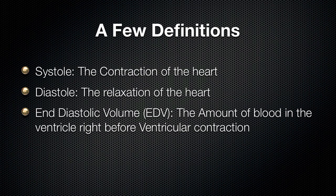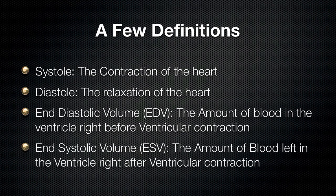Then of course we have the end systolic volume, which is the amount of blood left in the ventricle right after ventricular contraction. So when the ventricles contract and push the blood out to the lungs and to the rest of the body, the amount of blood that we have left over is the end systolic volume — which once again makes sense because it's at the end of systole.